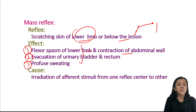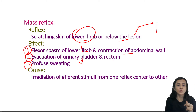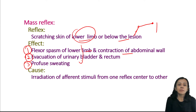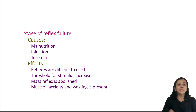The mass reflex can be utilized by paraplegic patients. When the patient cannot voluntarily evacuate the bowel or bladder, they simply pinch or stroke the skin below the level of the lesion, and the bowel and bladder are evacuated. This concludes the second stage — the stage of reflex activity.